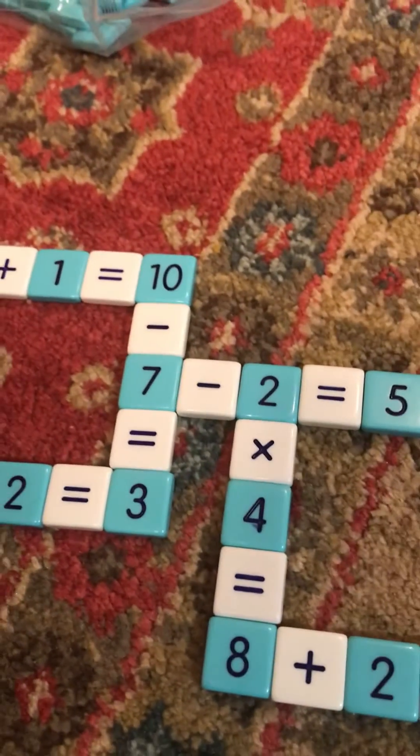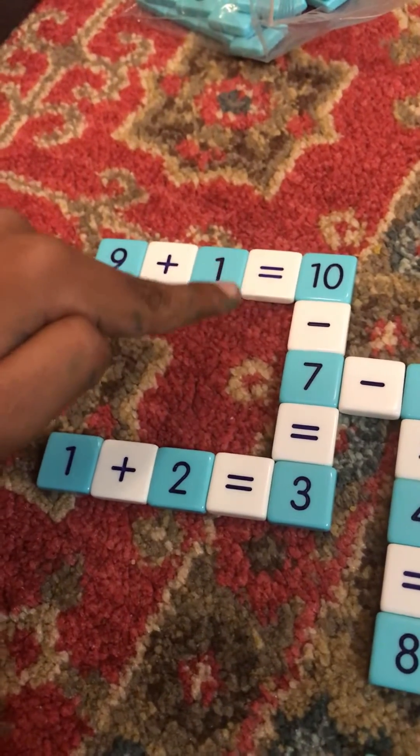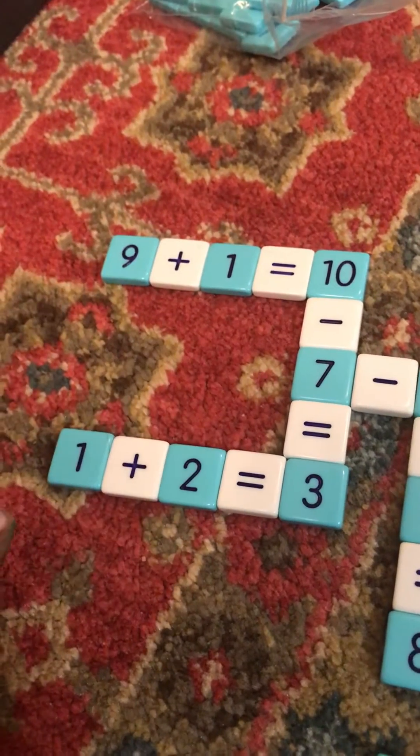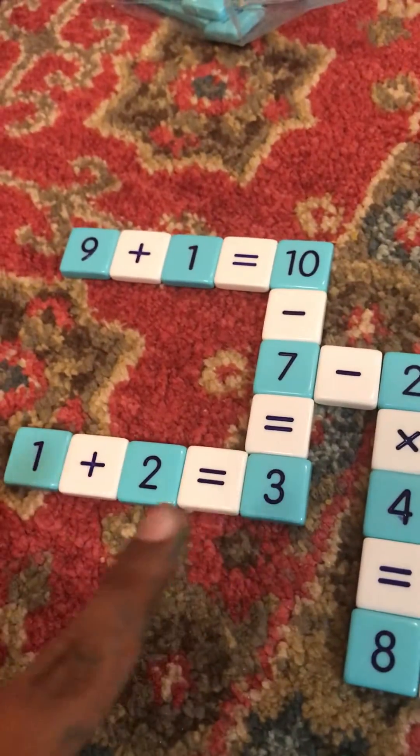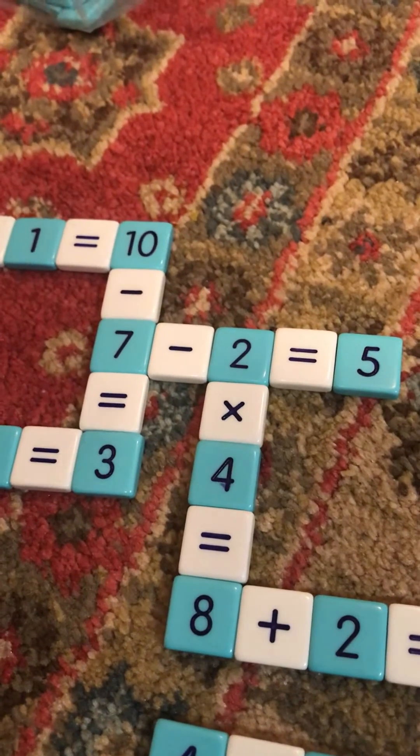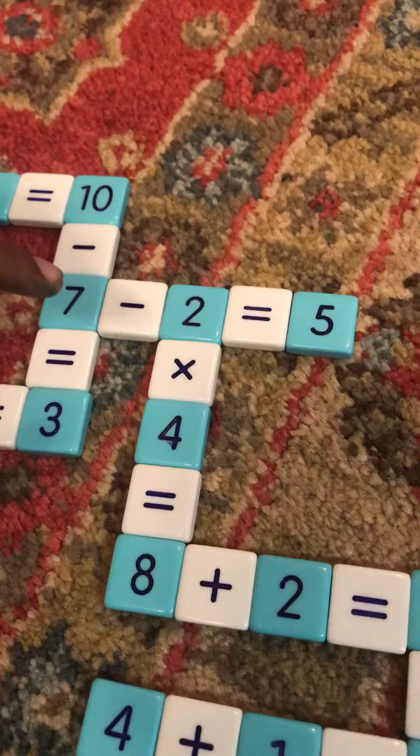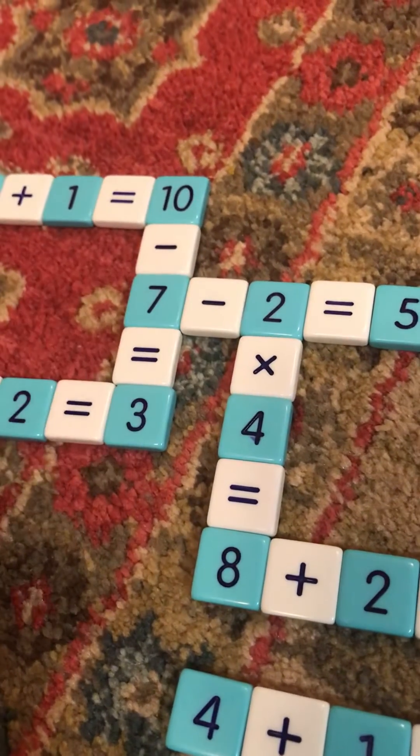Okay, so 9 plus 1 equals 10, 10 minus 7 equals 3, and 1 plus 2 equals 3, and there's another side here. It's 7 minus 2 equals 5, and another way, there is another number making with 2.